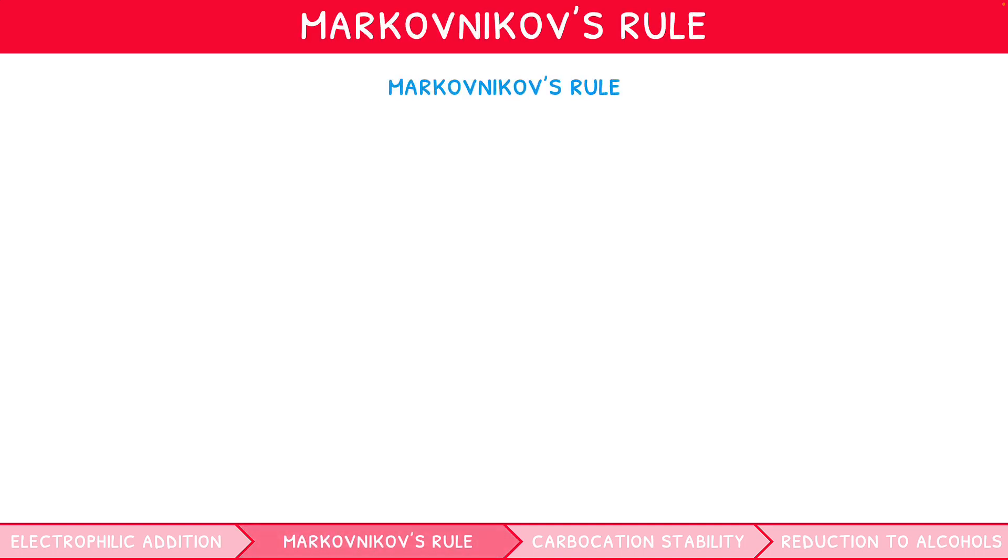Markovnikov's rule simply states that the electrophile will preferably bond to the carbon atom from the double bond with the largest number of hydrogens already bound. Since the electrophile is mostly hydrogen, it is often summarised to, those who have more shall get more.